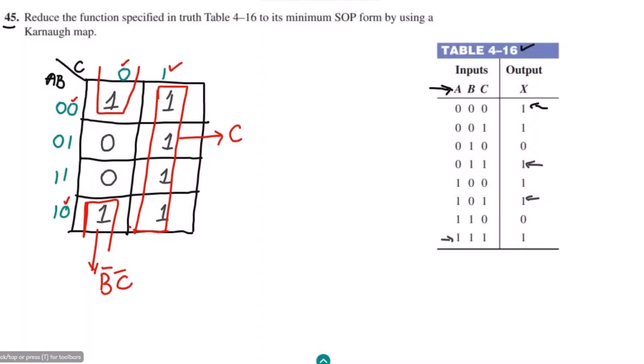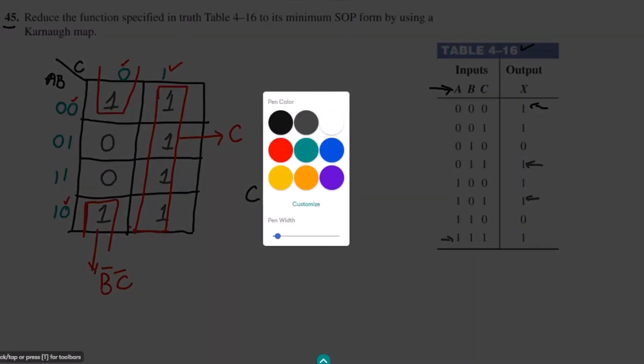Therefore, the output term or the simplified term is C plus B complement C complement.